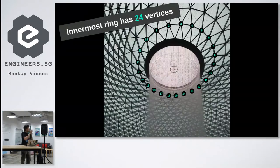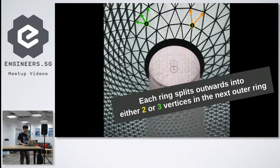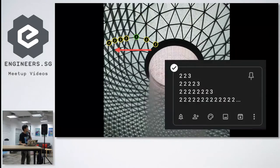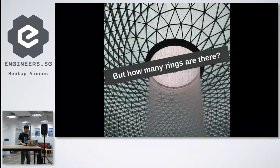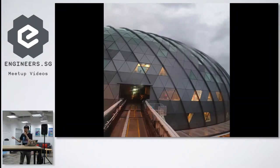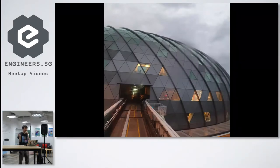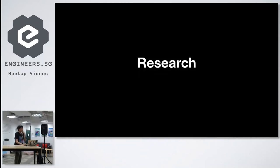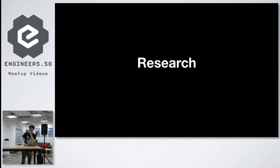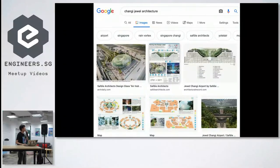There are 24 vertices and it's split into two or three in the outer ring, so I took notes of how it splits. Then there was a problem: how many rings are there? After taking the shuttle bus between Terminal 3 and Terminal 1 back and forth several times, I still couldn't find how many rings there are, so I had to depend on some research. I searched for Changi Jewel architecture and, to increase my chance of finding the right answer, I added PDF.